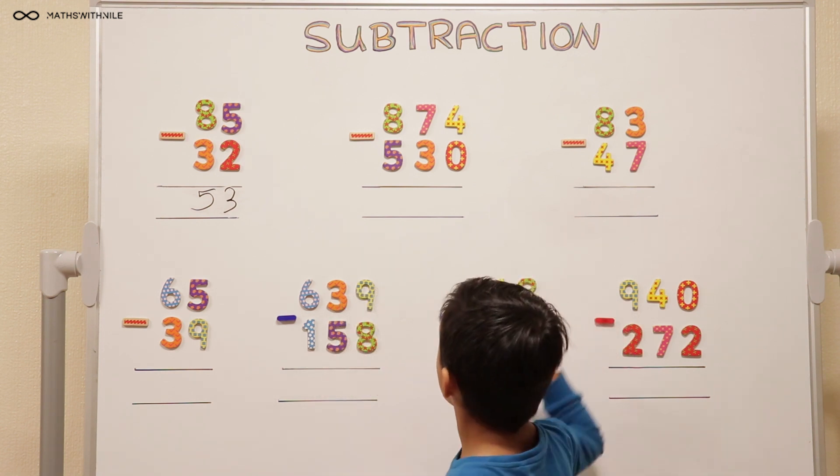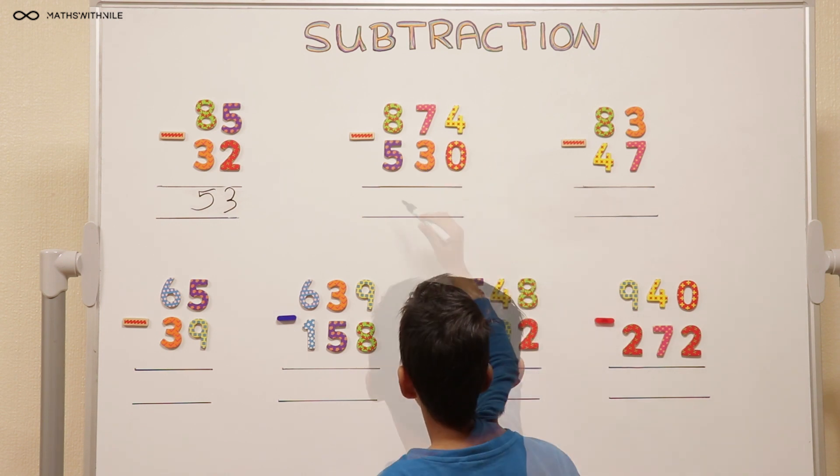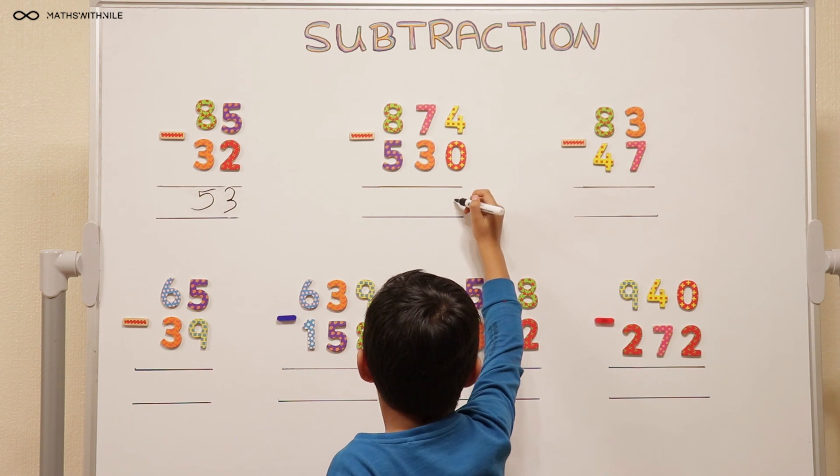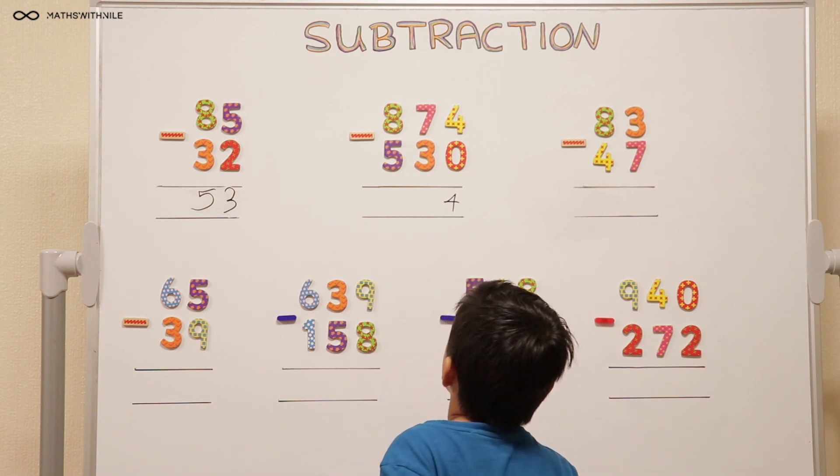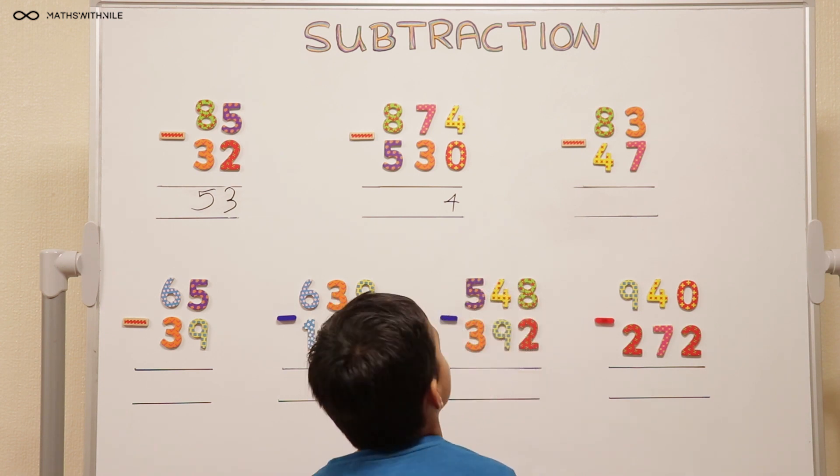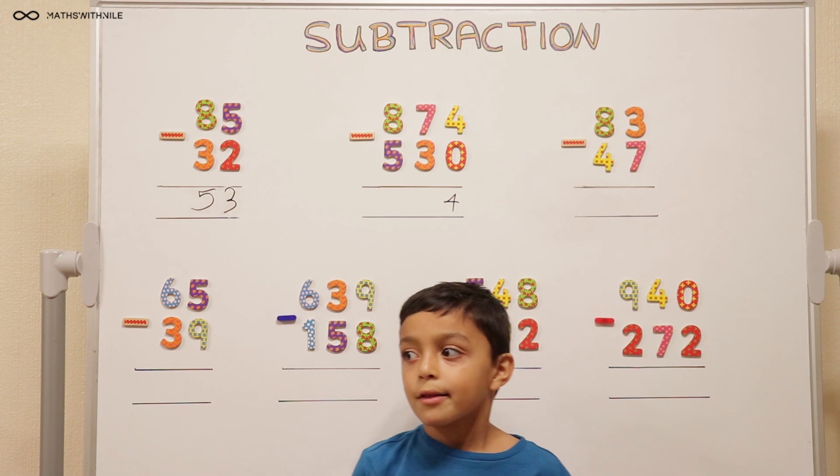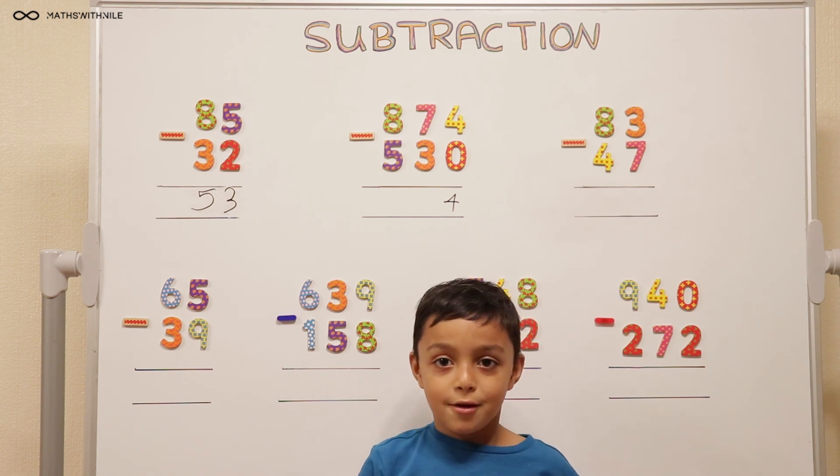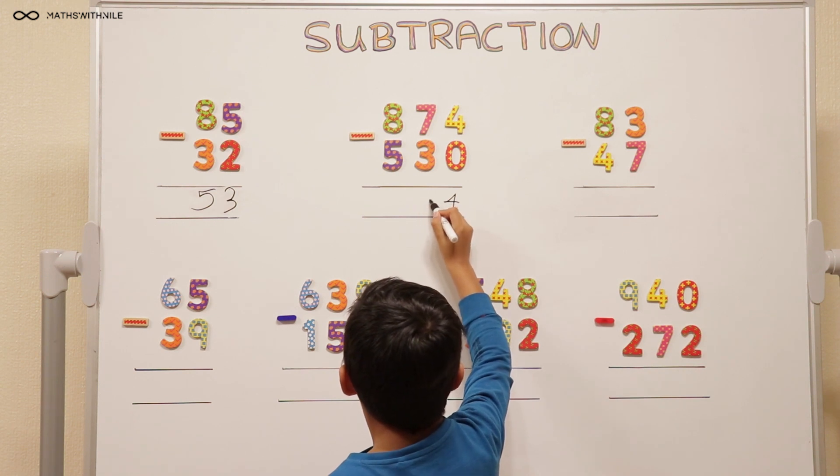Can you go on to the second question? 874 take away 530. So 4 take away 0 equals 4. 7 take away 3. What method are you going to use? I'm just going to go from 3 adding up in ones to 7. 3, 4, 5, 6, 7. So 4. That's a good method.